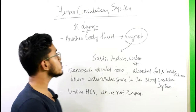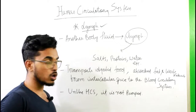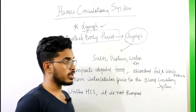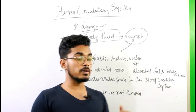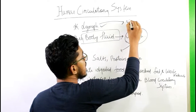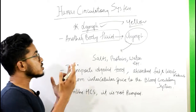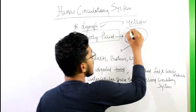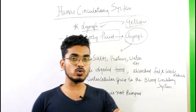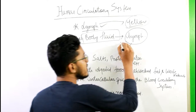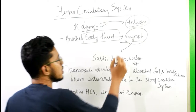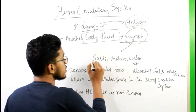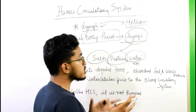Now let us talk about lymph. Lymph is a body fluid — it is one kind of body fluid like blood, but its chemical composition is quite different from blood. The color of lymph is yellow because it does not have the red pigment hemoglobin. Lymph is a fluid that contains salts, proteins, and water.